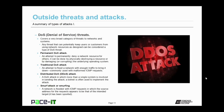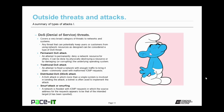Then there's the distributed DOS attack, or the DDOS attack. It's a DOS attack in which more than a single system is involved in sending the attack. Often, a botnet is used to implement the DDOS attack. And finally, we have the smurf attack, also known as smurfing. This is where a network is flooded with ICMP requests in which the source address for the requests appears to be that of the intended target — so that address has been spoofed. As the network responds to the ICMP requests, the victim is denied access to the network because they're getting flooded with bogus responses.